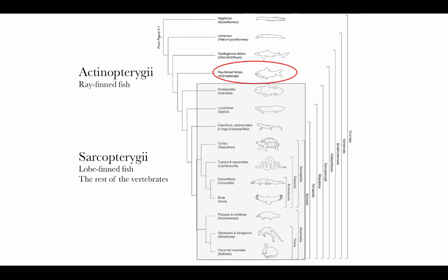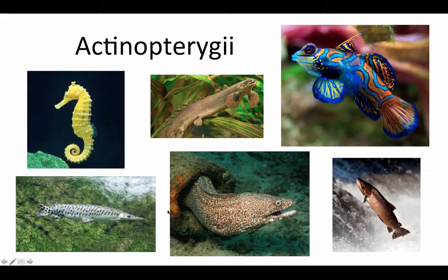The Osteichthyes have two major branches. One branch is the Actinopterygii — the ray-finned fishes. The other group is called Sarcopterygii, or lobe-finned fish, except that that grouping includes lots of things that aren't fish as well — lobe-finned fish as well as the rest of the vertebrates. The Actinopterygians are most of the fish that you would recognize as fish: everything from seahorses to salmon and trout, fish that are good to eat, pretty aquarium fish, moray eels — all ray-finned actinopterygians.